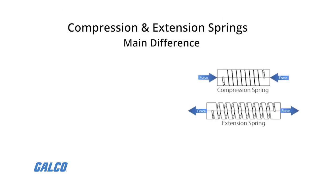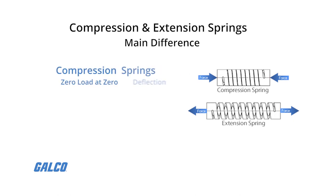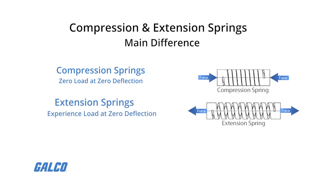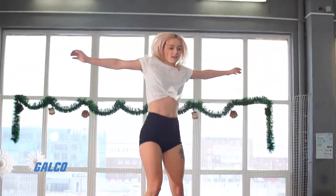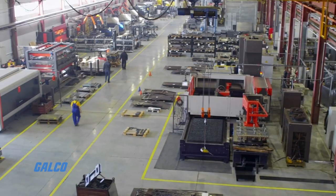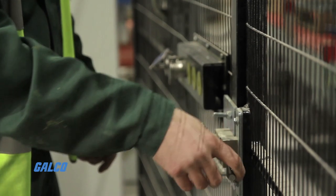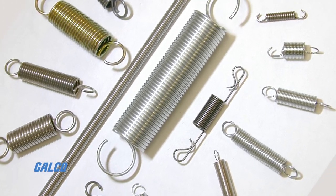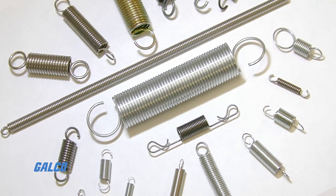One way to explain the main difference between compression and extension springs is to compare their loads at zero deflection. Compression springs have zero load at zero deflection, while extension springs experience a load at zero deflection due to their initial tension. A common example of extension springs are those used on trampolines. Industrial uses include medical devices and door mechanisms on automated equipment. It's important to note that extension springs have no mechanism to prevent overloading.